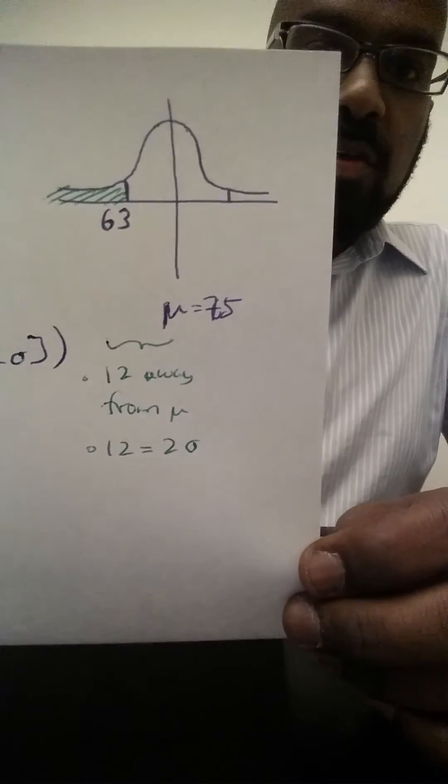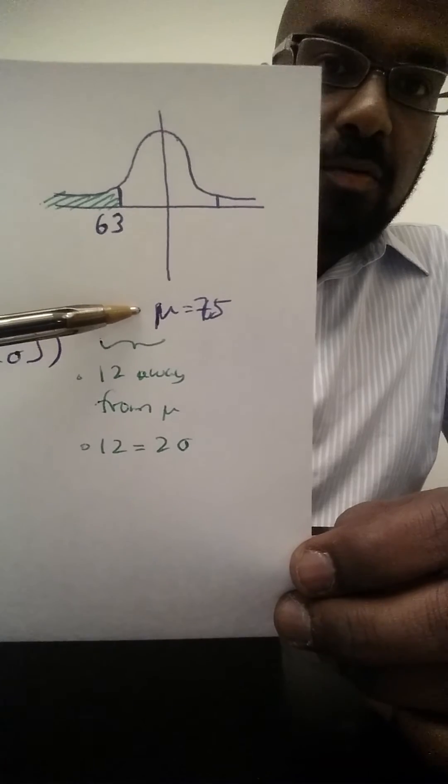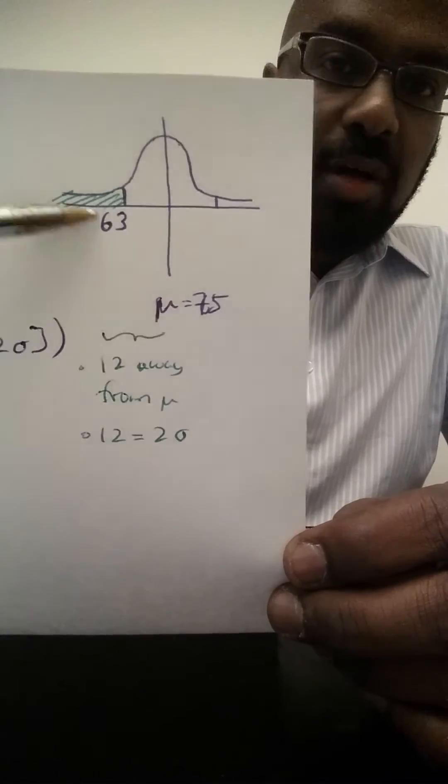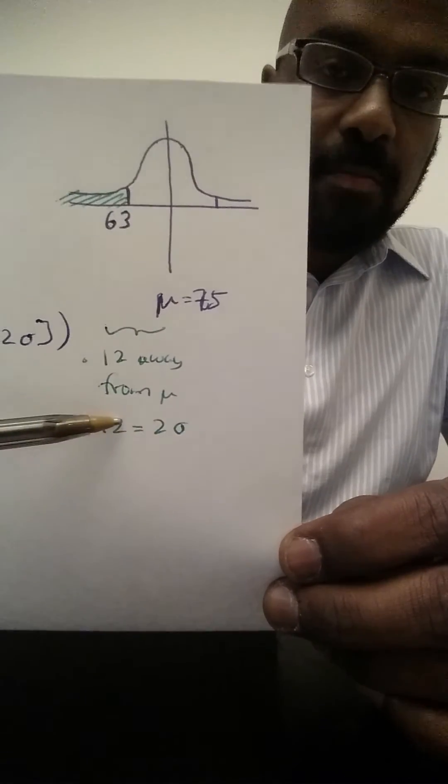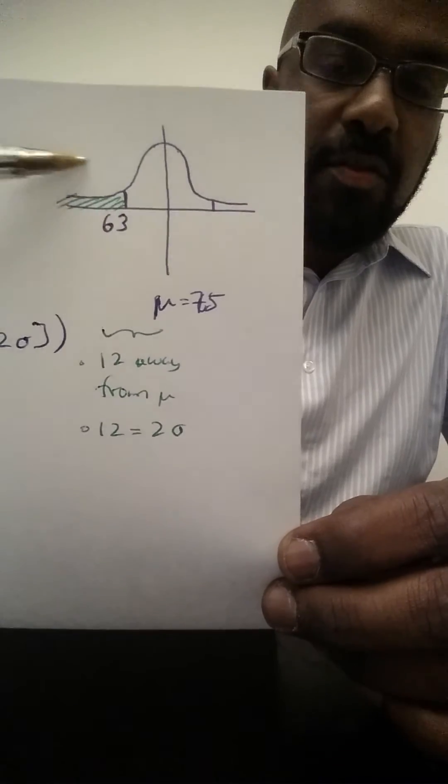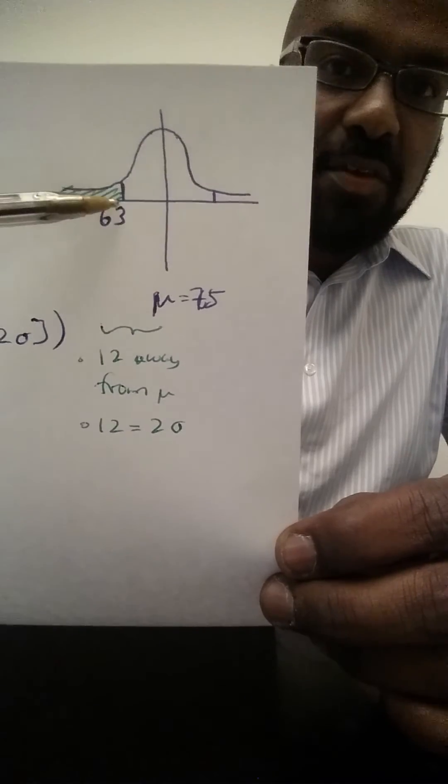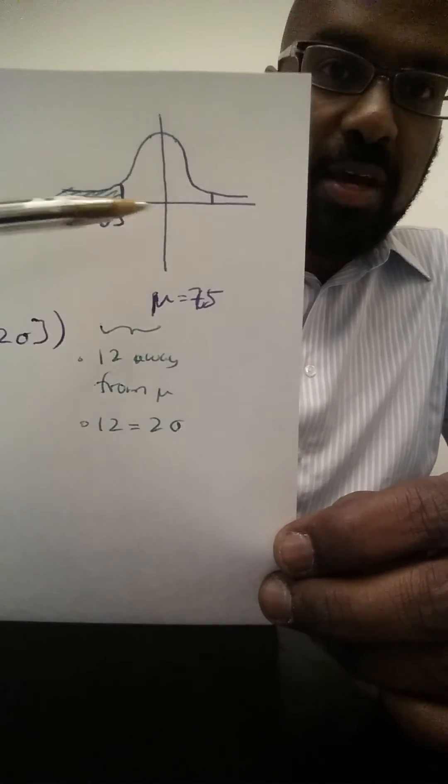The mean of our random variable is 75, and the standard deviation is roughly 6. 63 is 12 off from 75, so that's roughly twice the standard deviation, and so we're interested in the probability that we are in this region, which is everything to this side of two standard deviations away from the mean.